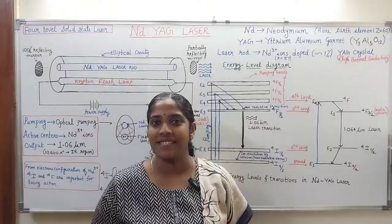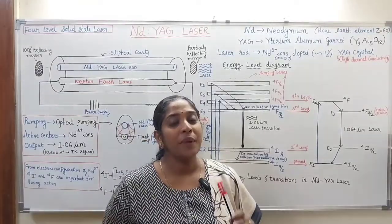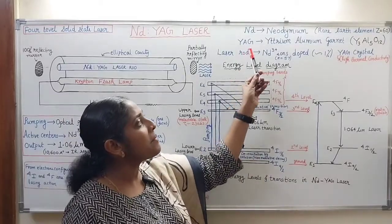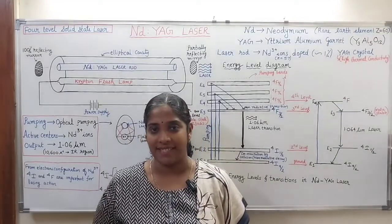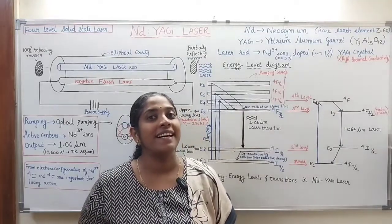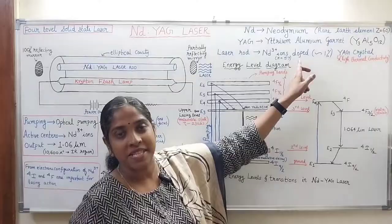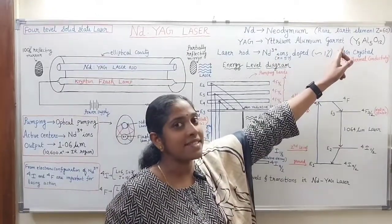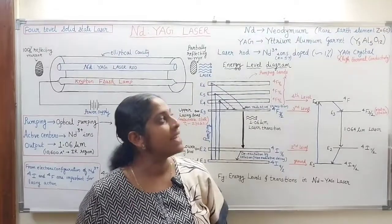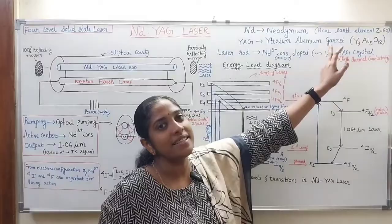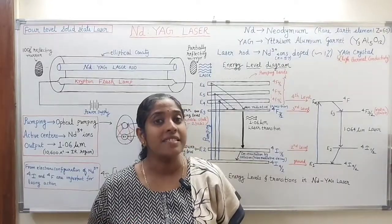YAG is a transparent crystal with high thermal conductivity, high mechanical strength, and good optical quality. In Nd:YAG, neodymium ions are doped into the YAG crystal, where the YAG crystal is a host lattice — meaning it does not participate in the laser action. The active centers in this Nd:YAG laser are Nd³⁺ ions. Since neodymium has atomic number 60, Nd³⁺ ions have an effective atomic number of 57. The laser rod is Nd³⁺ ions doped in YAG crystal.